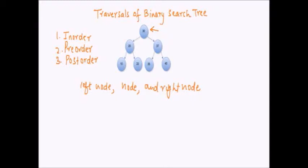Taking an example of this tree, to visit node 30, we have to first visit its left subtree before visiting 30. The in-order traversal of this tree works as follows: we go to 30, and since there is a left subtree rooted at 20, we need to traverse that left subtree first. So we go down to node 20 and check whether there is a left subtree of 20. Yes, there is a left subtree of 20 with node 10.